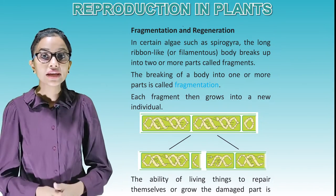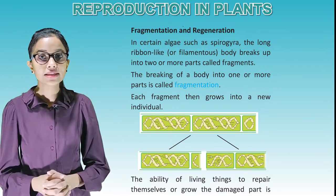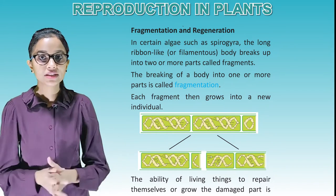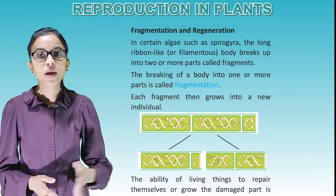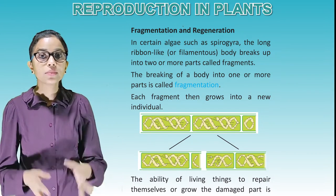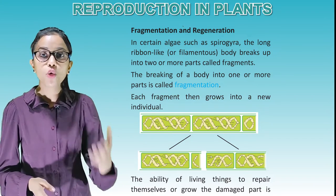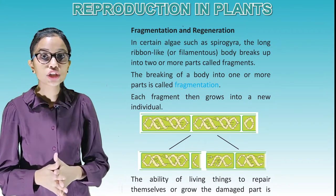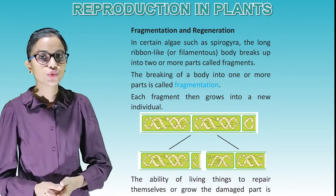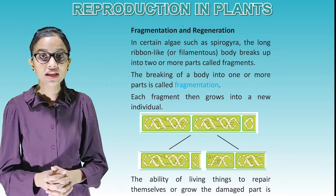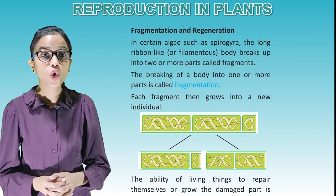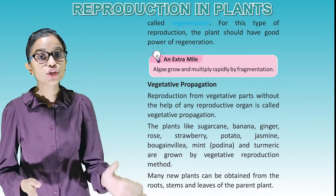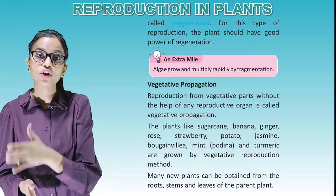Fragmentation: In certain algae such as spirogyra, the long ribbon-like or filamentous body breaks up into two or more parts called fragments. The breaking of a body into one or more parts is called fragmentation. Each fragment then grows into a new individual. The ability of living things to repair themselves or grow damaged parts is called regeneration. For this type of reproduction, the plant should have good power of regeneration.